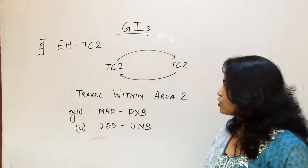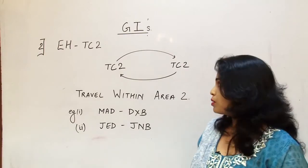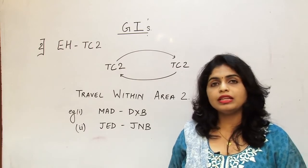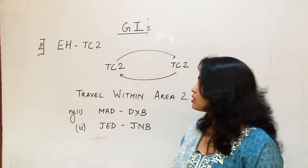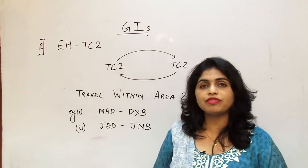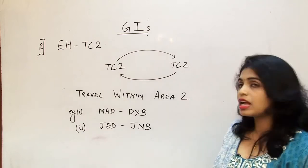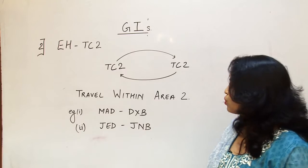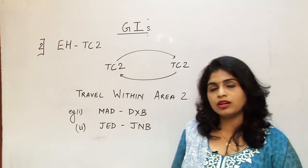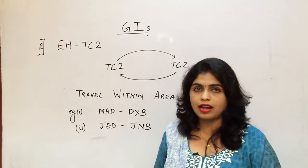Now we have a second GI which is EH, Eastern Hemisphere. Once when Eastern Hemisphere is the global indicator this is when we are talking about traffic conference area 2. So what is happening here is travel is within area 2. We are talking about area 2 which includes Europe, Middle East and Africa.